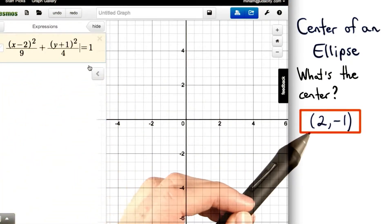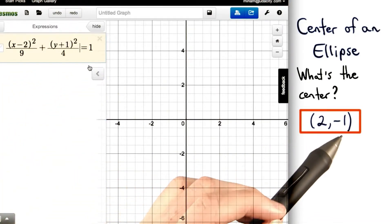This ellipse would be centered at 2, negative 1. Good thinking if you found this point.